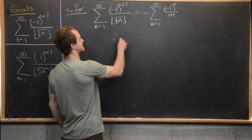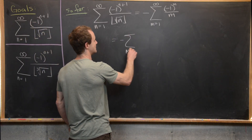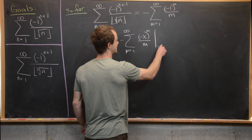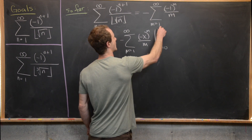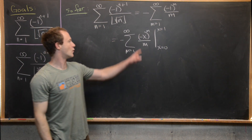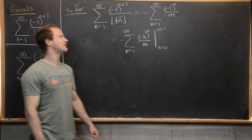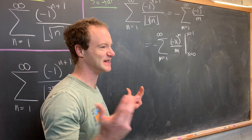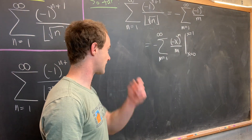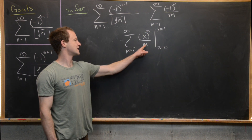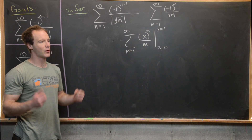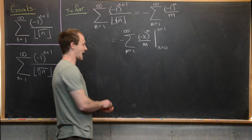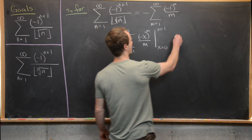We rewrite this as minus the sum as m goes from 1 to infinity of minus x to the m over m, where x is evaluated at 1 to recover the original sum. Notice that the exponent and the denominator are both m, which points towards taking an integral of a power series.